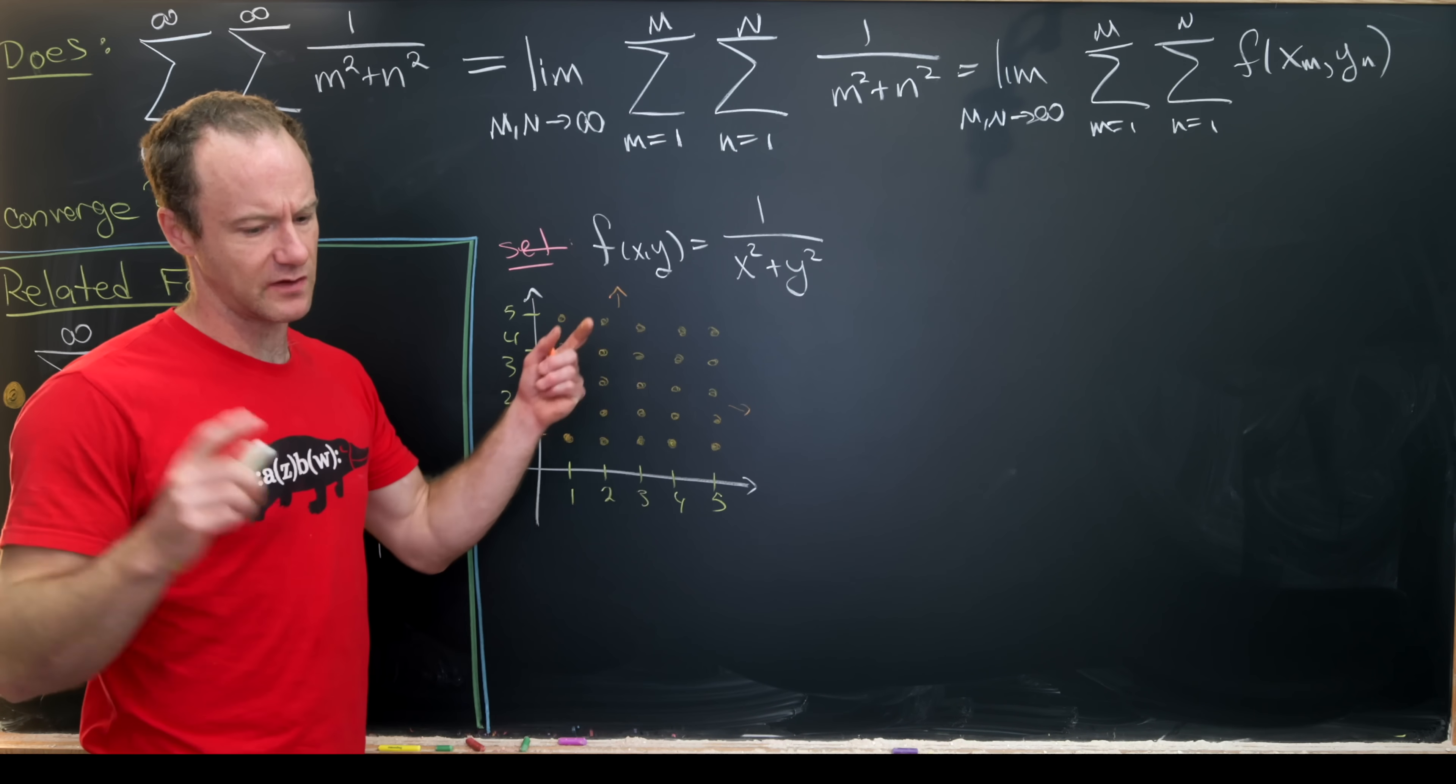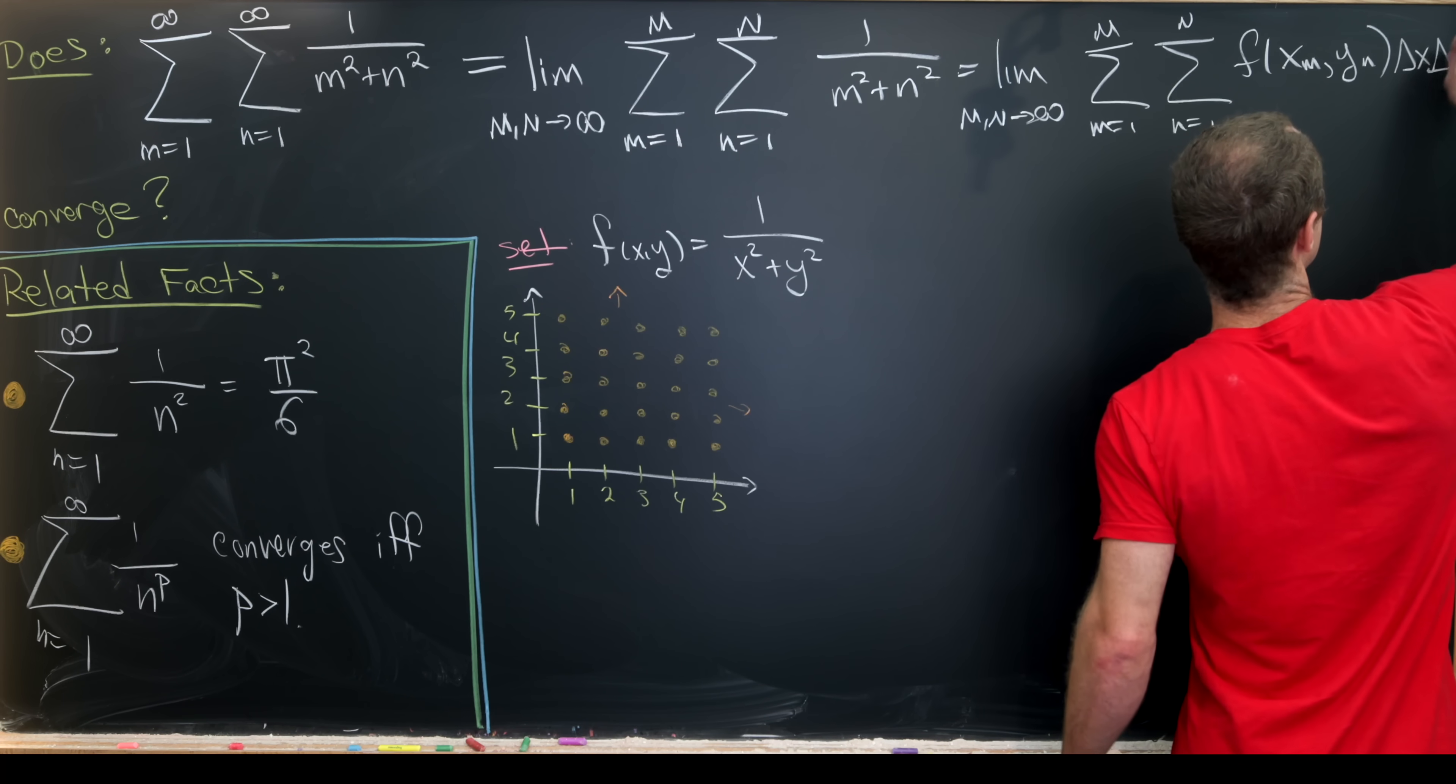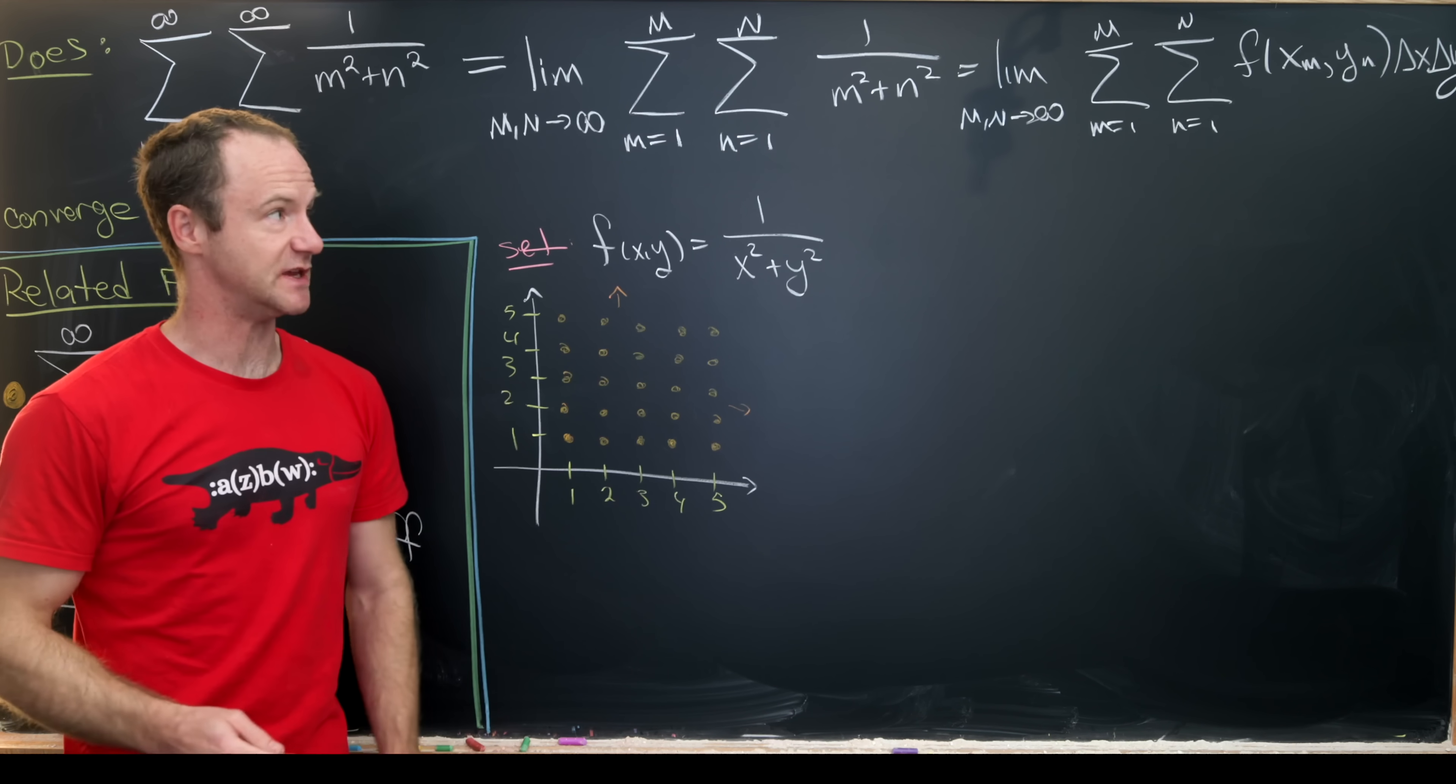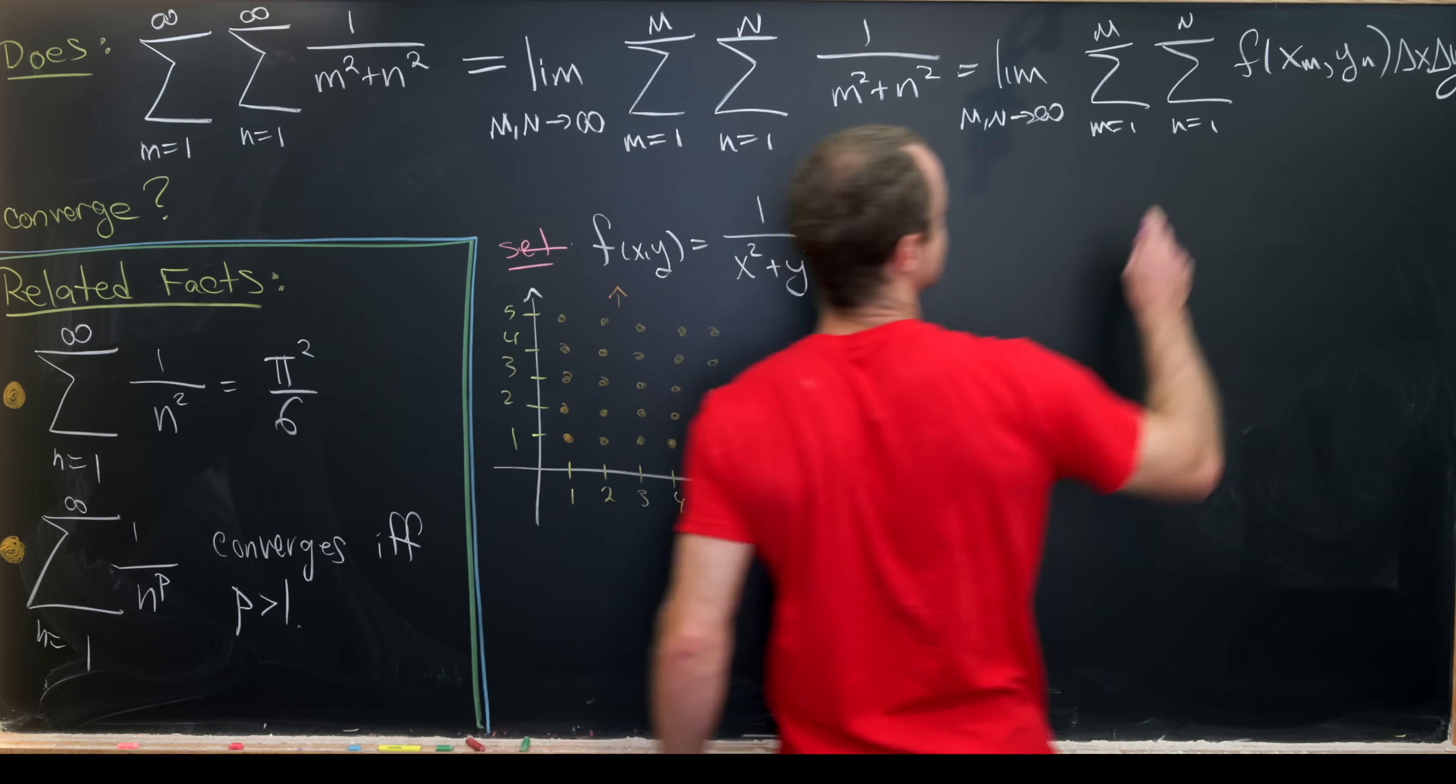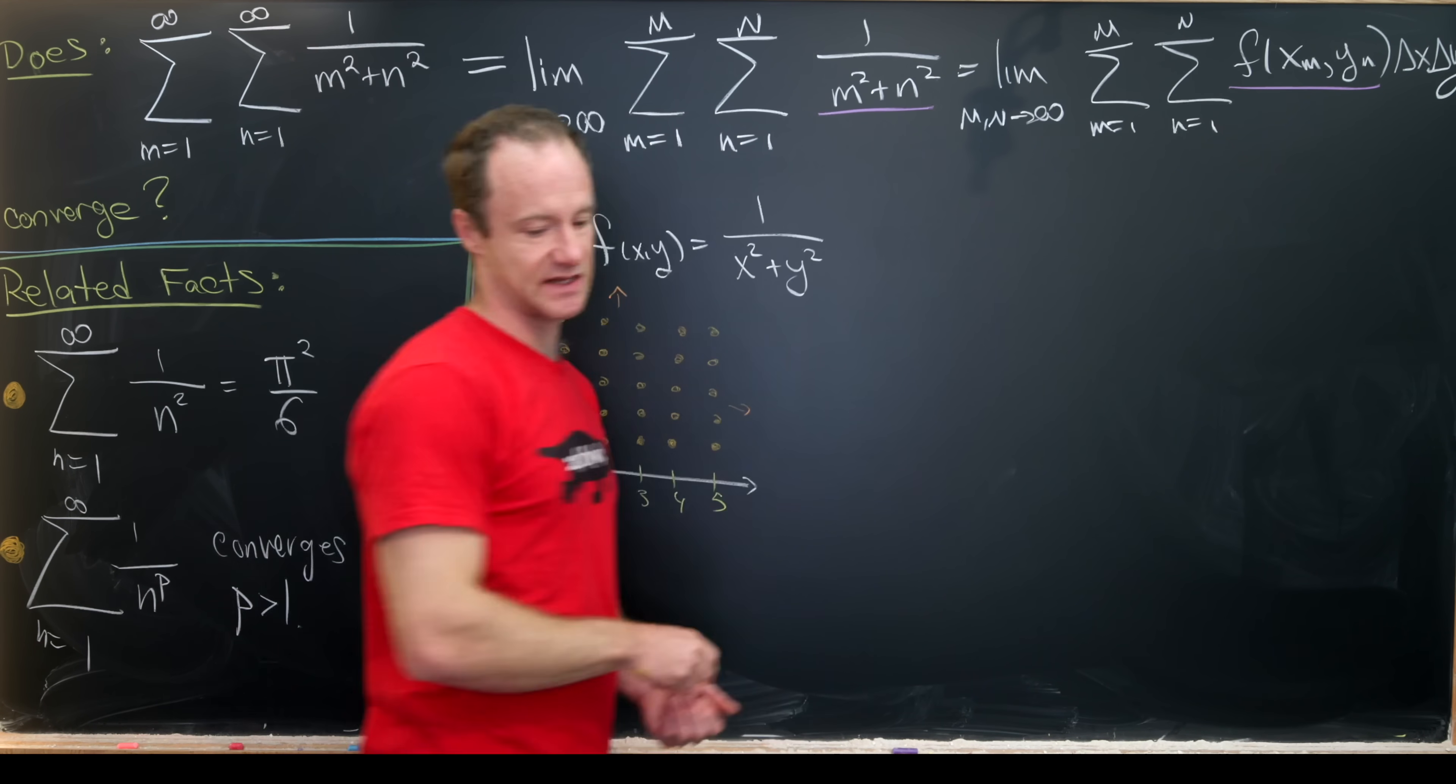And then maybe we could put delta xy there as well just to fit it in, just keeping in mind that however we define delta xy that should be equal to 1, given the fact that this f of x sub m, y sub n should turn into this thing right here.